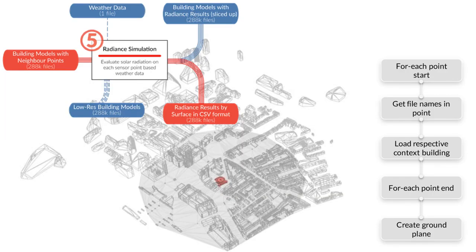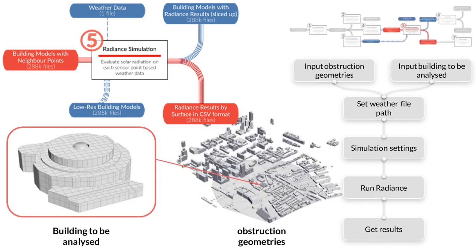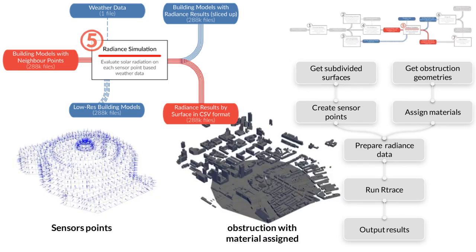In step 5, for each building in the city model, an R-Trace simulation is executed. Note that if there are hundreds of thousands of buildings, this step will be repeated hundreds of thousands of times. First, each target building together with the near and far neighbors are loaded into Houdini. Each surface on the target model is then subdivided into patches of 3 by 3 meters, ensuring that radiance is sampled evenly across all surfaces — referred to as surface patches. An input file is then generated for the analysis points in the format required by R-Trace, containing the centroid and surface normal of each surface patch. Finally, the R-Trace simulation is executed, with inputs including the analysis points, the neighboring building models, and the cumulative sky model.